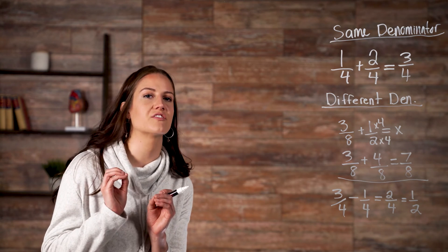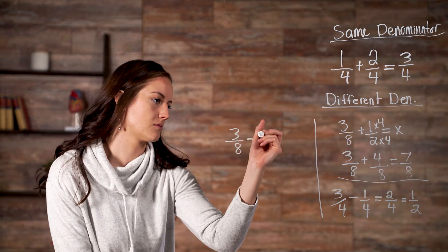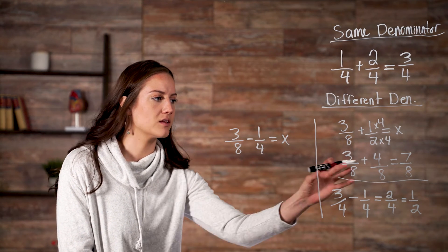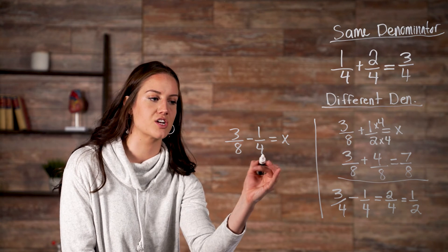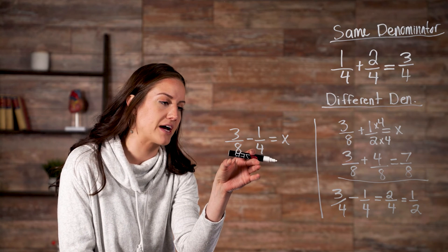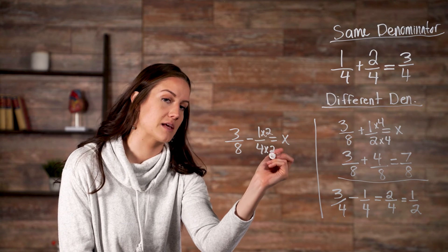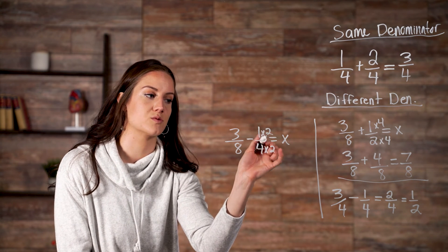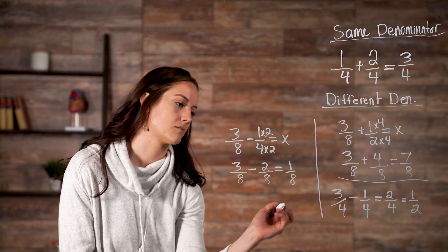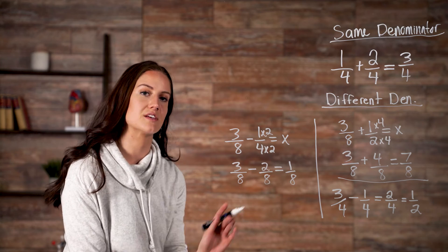But if you're subtracting with a different denominator, you have to make the denominators match. For example, in this example, three-eighths minus one-fourth is equal to x. We need our denominators to match. So, we need to find out what can we do to make our denominators match. Well, in this case, we can multiply four times two. But remember, we have to do the same thing that we do to the denominator, we must do to our numerator. So, once we multiply our second fraction here by two, we get three-eighths minus two-eighths, which gives us one-eighth.